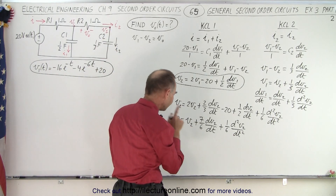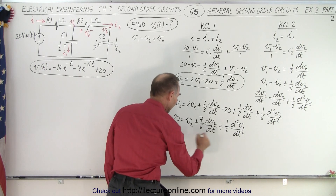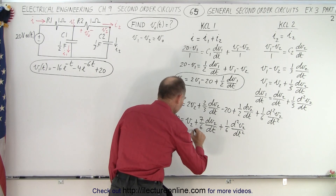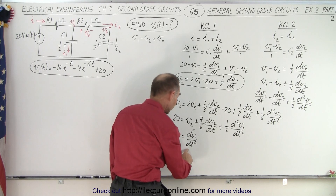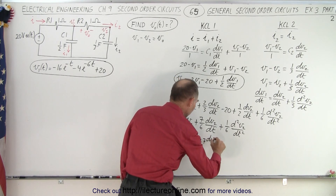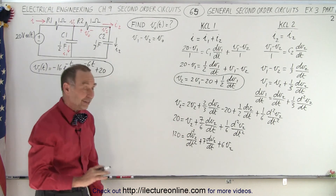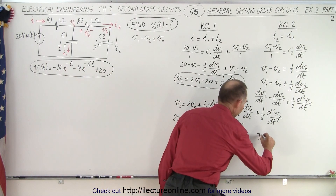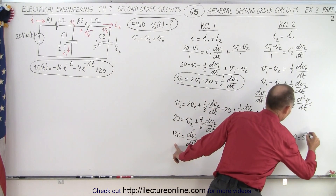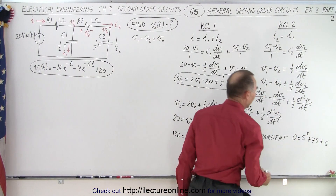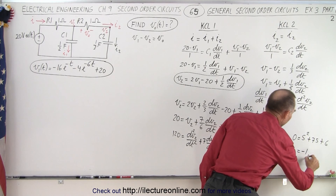So, multiplying everything by six, we get 120 is equal to — rearranging in order — the second derivative of V2 with respect to time, plus seven times dV2/dt, plus six times V2. Again, we have our differential equation. To find the transient solution, we find the characteristic equation set equal to zero: zero equals S squared plus seven S plus six. And from the previous video, we knew that S1 and S2 are equal to minus one and minus six.